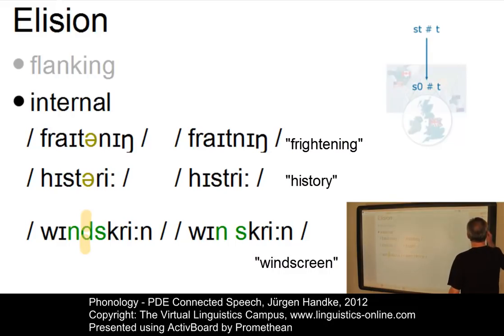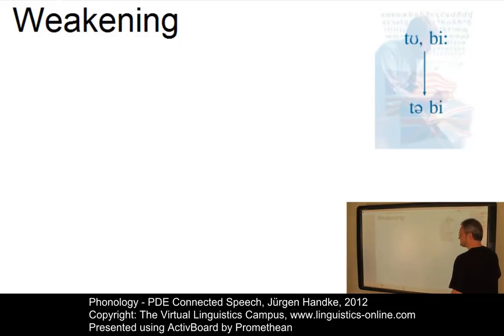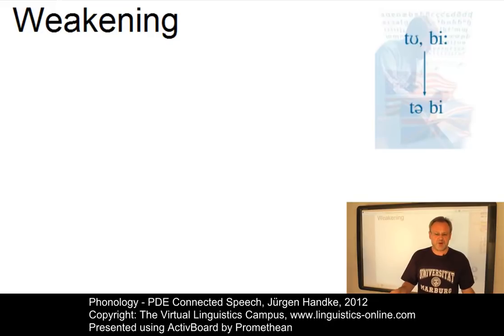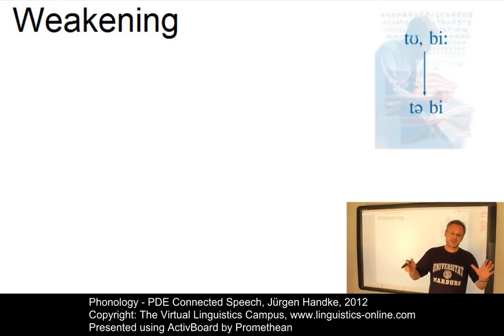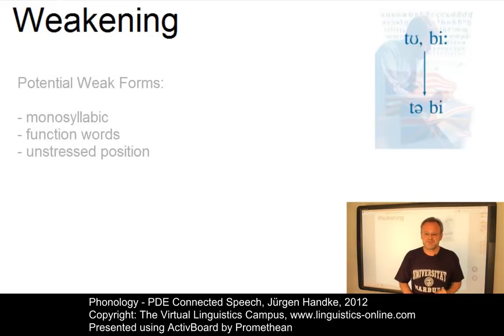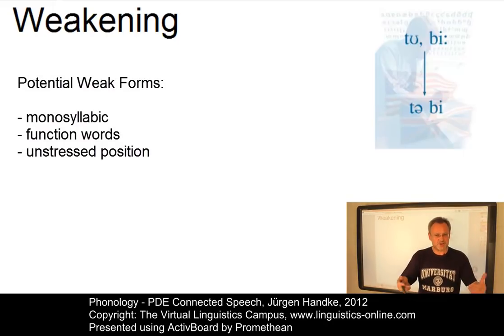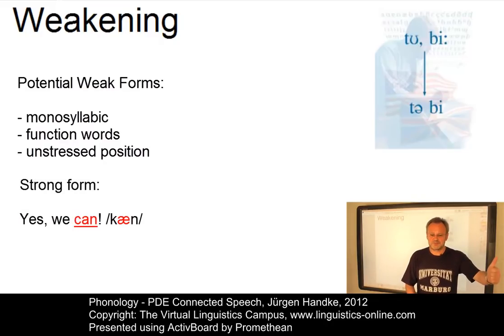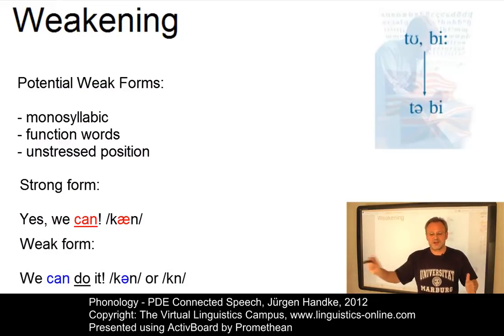Let's look at weakening next. One of the most characteristic features of English phonology is the weakening of vowels to the central vowel schwa in unstressed syllables. This affects about four dozen monosyllabic function words — that is, function words consisting of one syllable only — which occur very frequently, more than one word in five, in conversational English. These words have a strong form in stressed position with a full vowel, and a weak form in unstressed position with a weakened vowel or with a syllabic consonant.